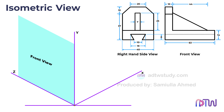We will draw the front view of the object in the YZ plane, as this will make more edges visible. To begin, let's create the outline of the base for the given figure. From the right-hand side view we can determine that the width of the base is 40 millimeters. Similarly, the length of the base is stated as 63 millimeters in the front view. With these dimensions in mind, we will construct the outline of the base for the object.